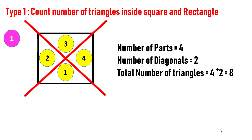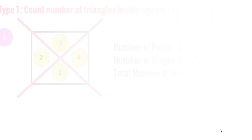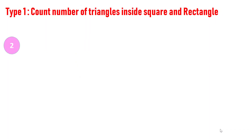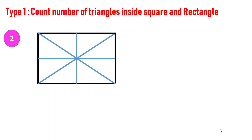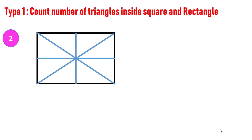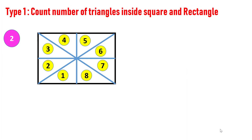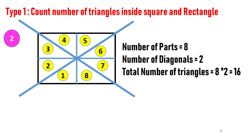Consider one more figure. Apply the same trick. Here, the number of blocks is eight and the number of diagonals is two. Hence, total number of triangles becomes eight into two, which is 16.